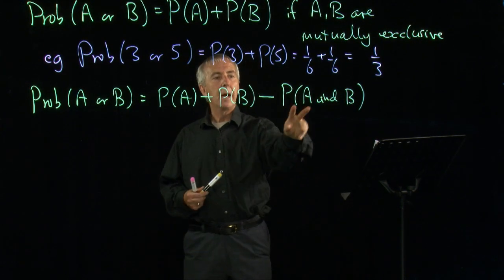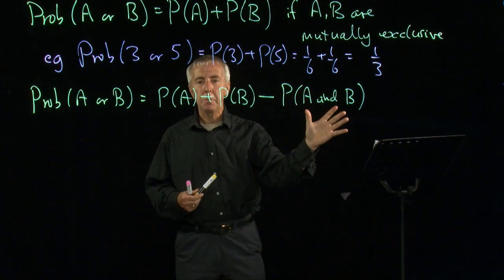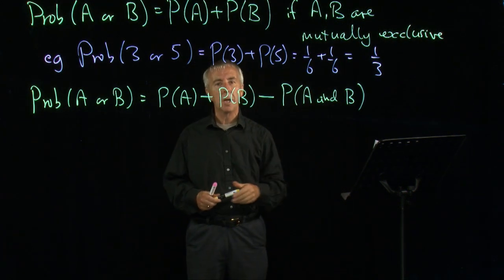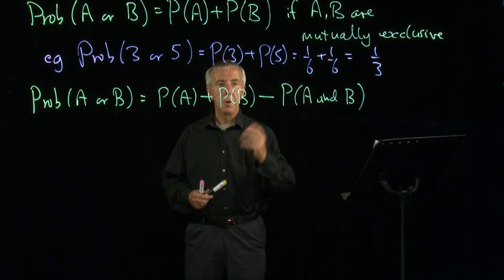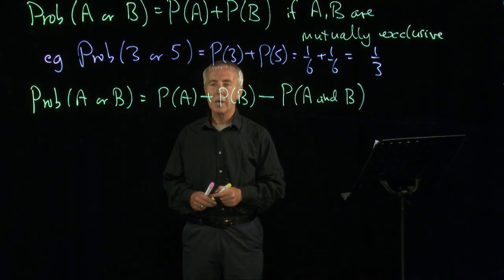In the first case, that was zero because A and B was impossible. If one happened, the other couldn't. But if it is a possibility, we need to subtract it.